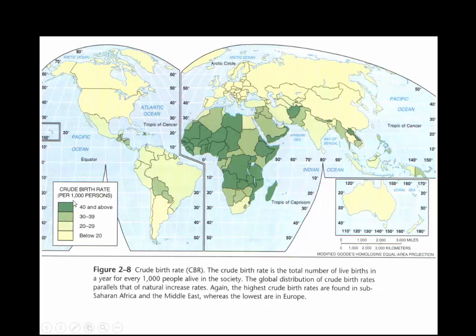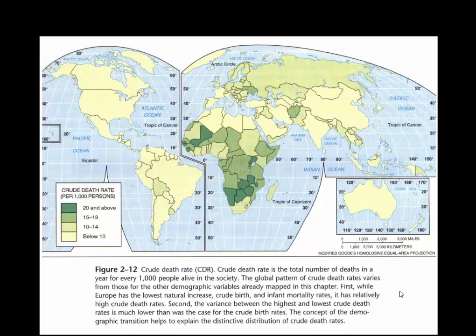The crude birth rate is the number of births per 1,000 people. You can see it's relatively high in Central America, Sub-Saharan Africa, Northern Africa, and the Middle East. Crude death rates in Sub-Saharan Africa are still relatively high, and they can be due to a number of reasons — an aging or growing population, diseases, or war.